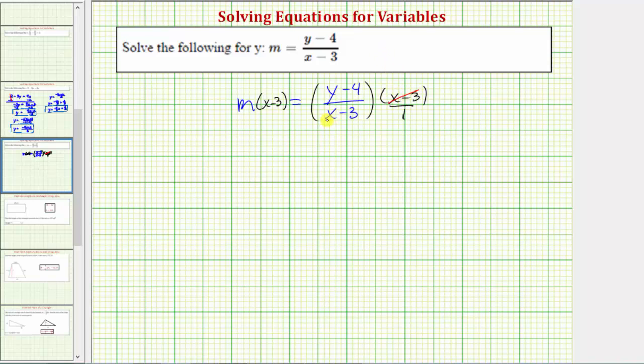x minus three over x minus three would simplify to one over one, and therefore, we just have the quantity y minus four times one, which equals the quantity y minus four. On the left side, we have m times the quantity x minus three.